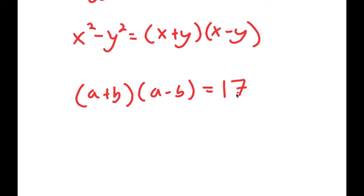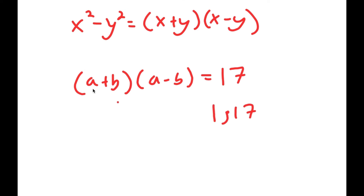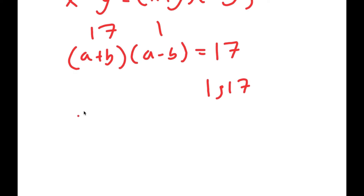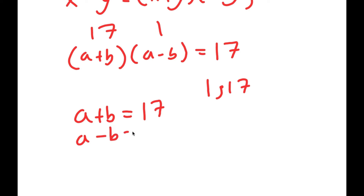The only factors of 17 are 1 and 17, meaning one of these two factors has to be 17 and the other has to be 1. Since a plus b is greater than a minus b, we can tell that a plus b is going to be 17 and a minus b is going to be 1. So I have two equations: a plus b equals 17, and a minus b equals 1.